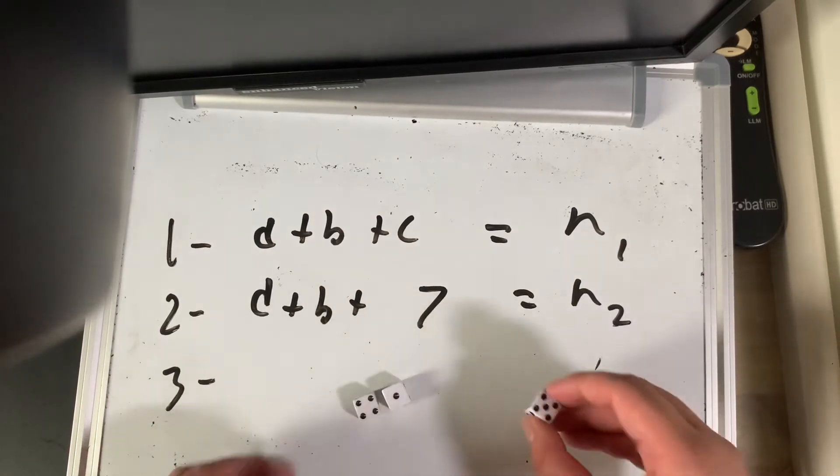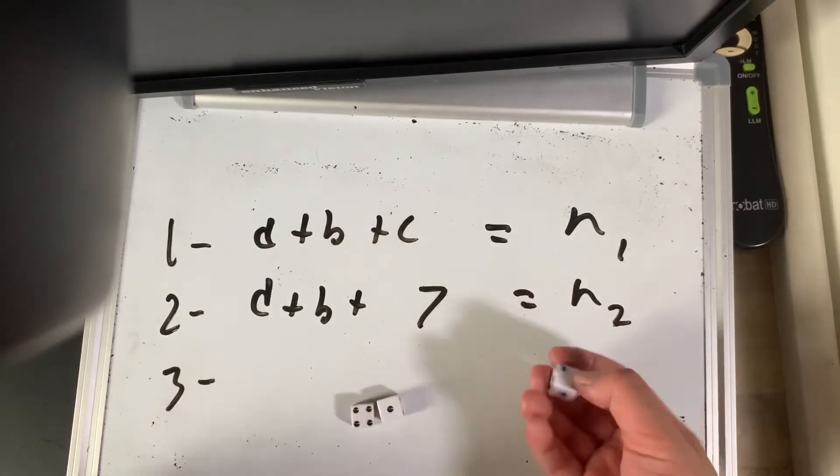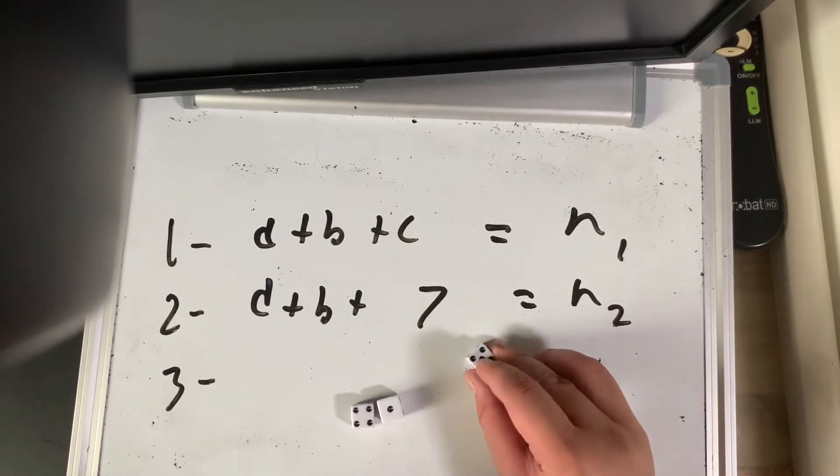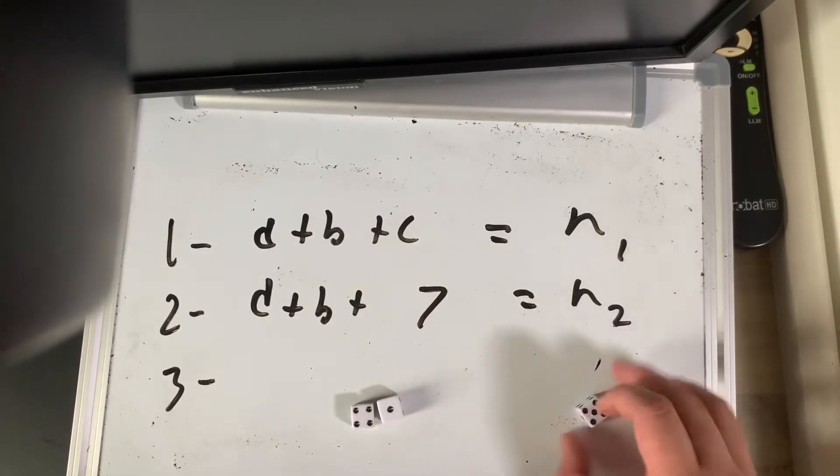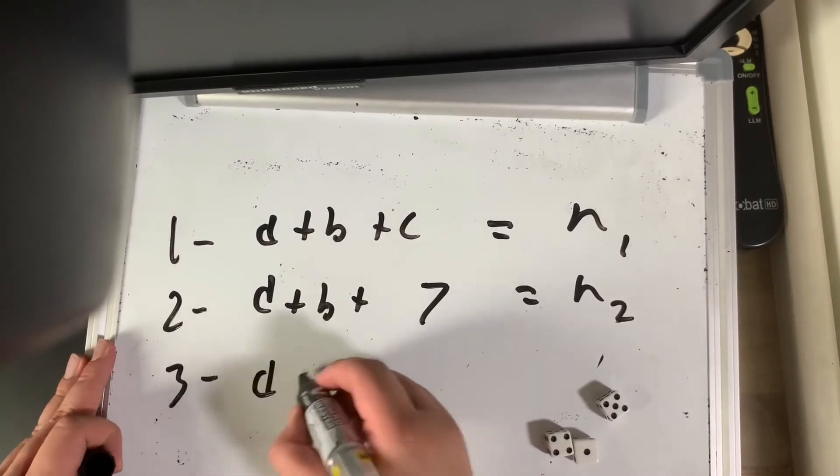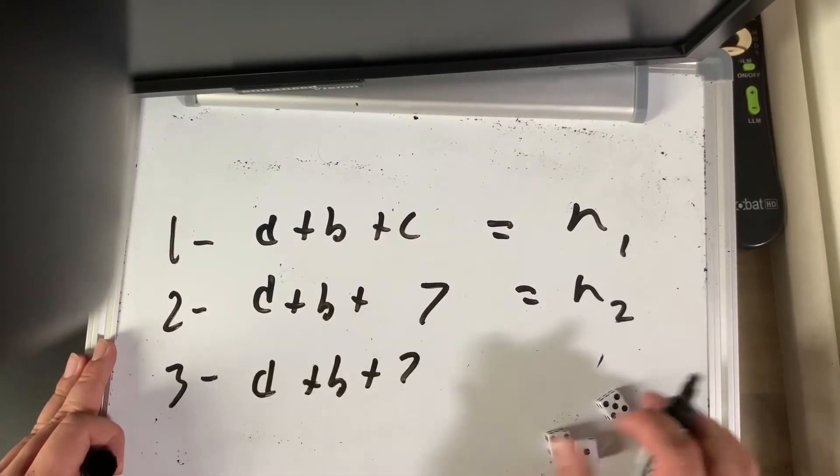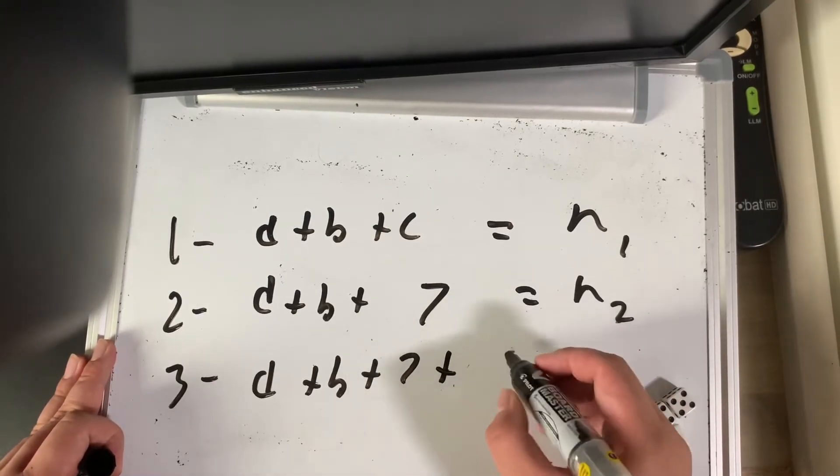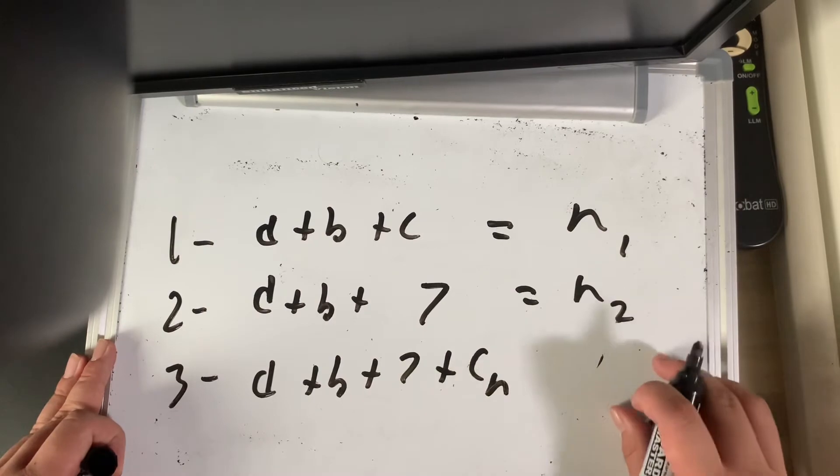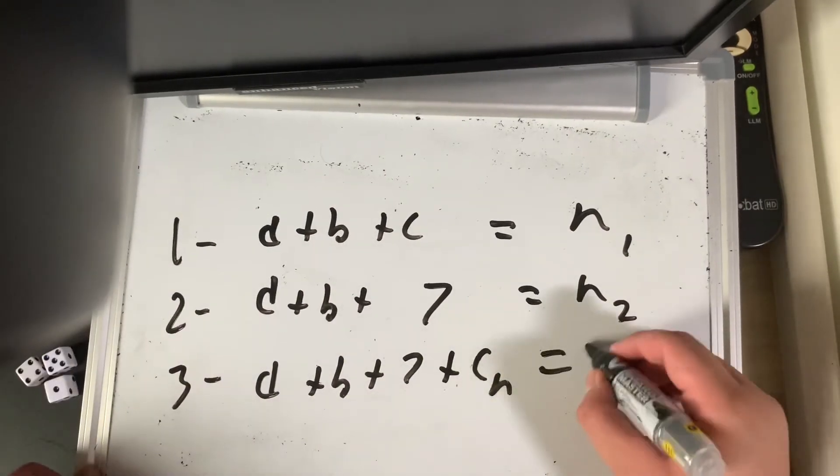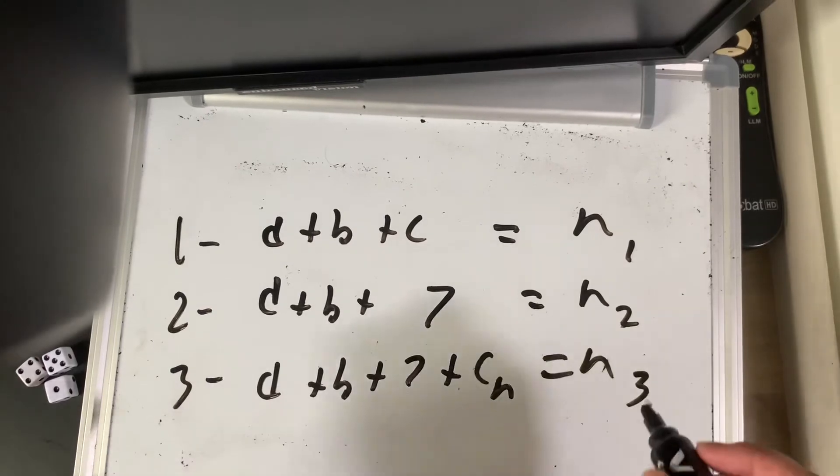Then I took this number, so this dice, I took the exact same dice, I re-rolled it and got a new number for C. This new number is 5. So I'm going to now put A plus B plus 7, then I added the new number, so that's going to be 5, plus C new. And this equals the final number N3, this is the one that the guesser is supposed to guess.